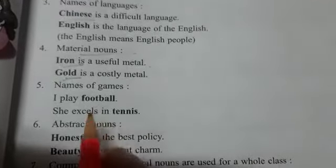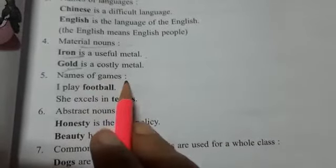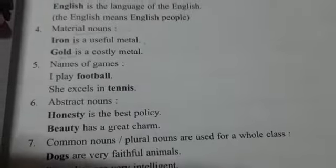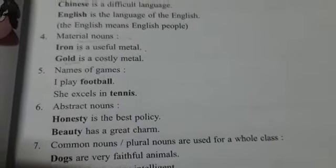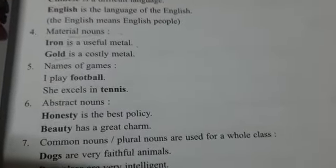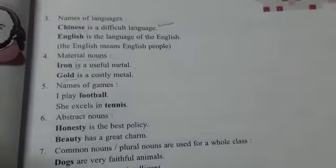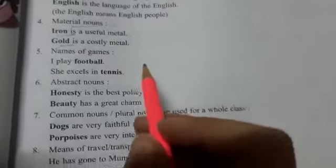Next is names of games. Games ke name ke saath bhi article ka use nahi karna hai. So to recap so far: first is proper nouns, then nouns used in general sense, then names of languages, then material nouns, and now names of games — with all of these we do not use any article.